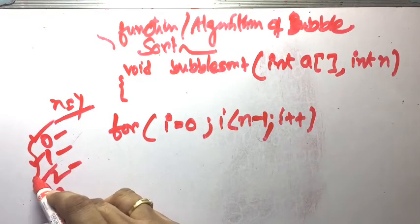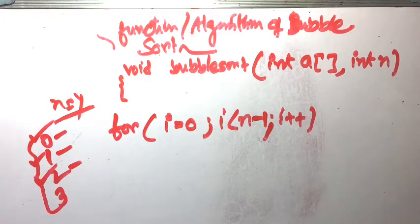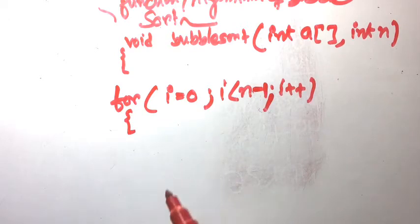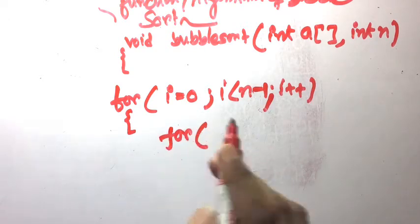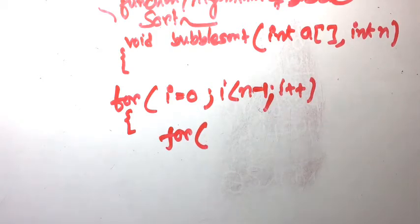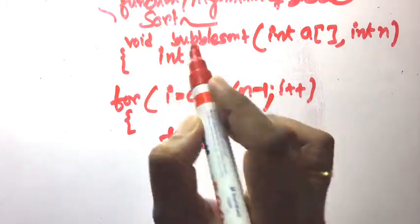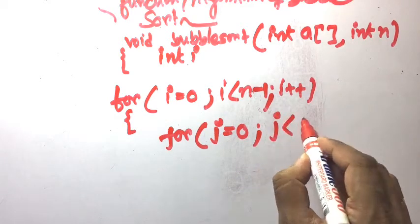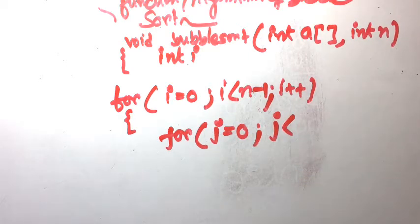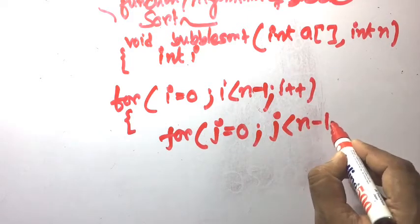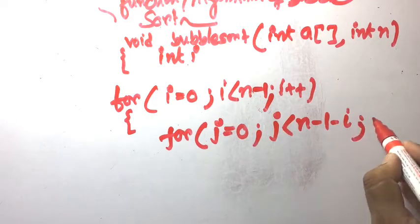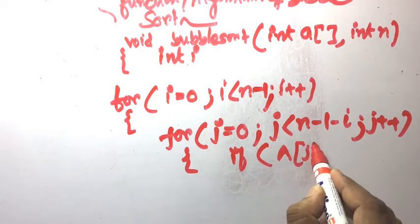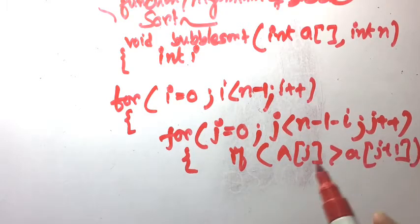The outer loop will execute n minus 1 times. Within this outer for loop, we have another for loop to compare one element to another and so on. We need another variable j. j always starts from 0 because it starts from the initial position. Every time, the number of comparisons is decremented by i, so j goes from 0 to n minus 1 minus i, with j plus plus. This is the comparison step.